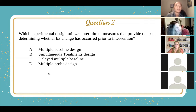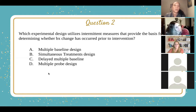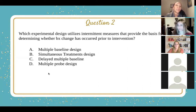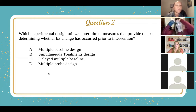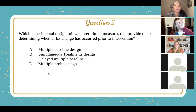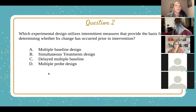Usually you would use a delayed multiple baseline because of resources and time constraints — you can't necessarily do the full multiple baseline design. For example, if you want to test whether a child can do the intervention in mom's house, dad's house, and school, but they're not at both houses at the same time — maybe it's every other week — you'd start the baselines at different times.